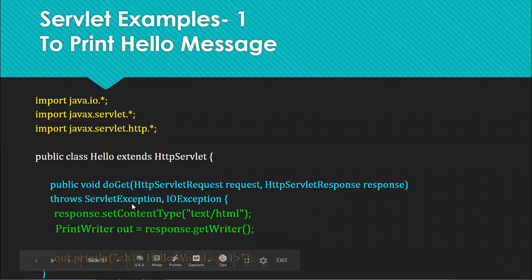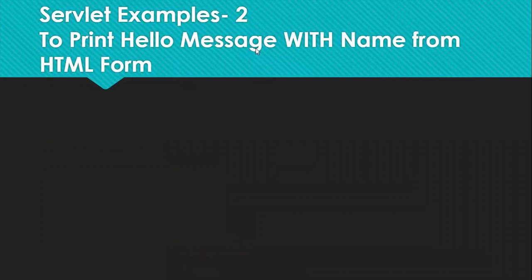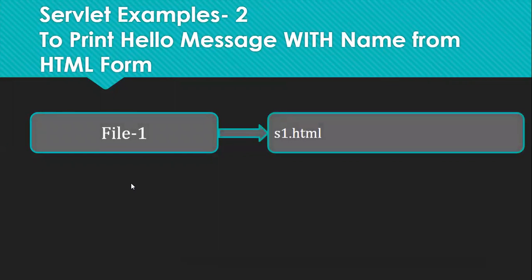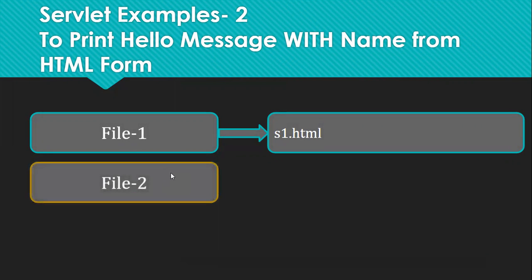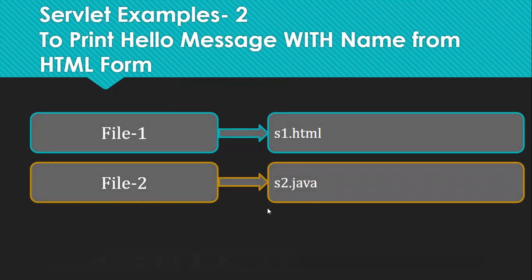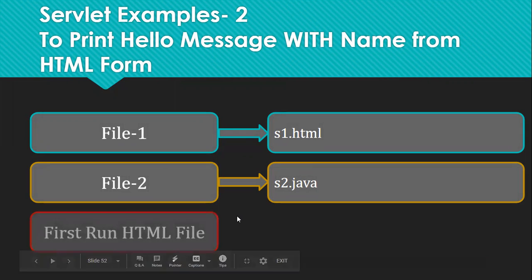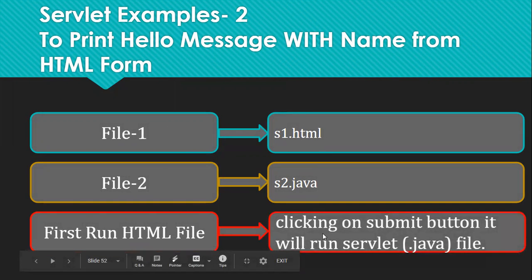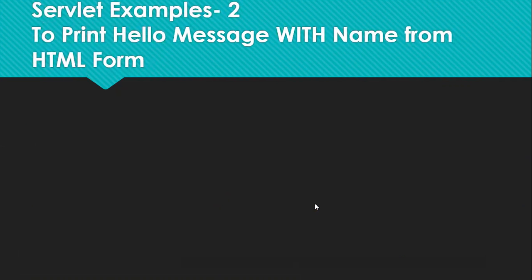This is a very simple basic example where we have made only one servlet code. The next example is to print a hello message with a name from an HTML form. In this case we have made an HTML page with a text box and a button. The user enters their name in the text box, and we read and print it in the servlet. This requires two files: the first file with .html extension, which I have used as s1.html, and the second is the servlet file with .java extension.